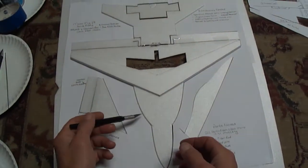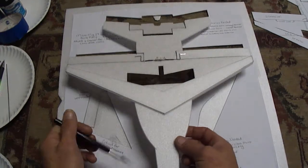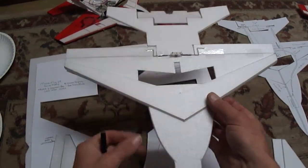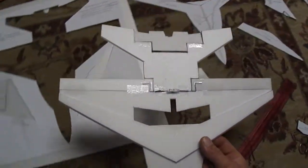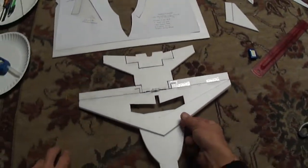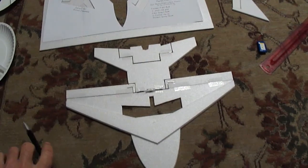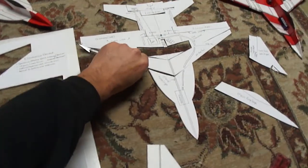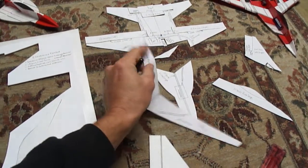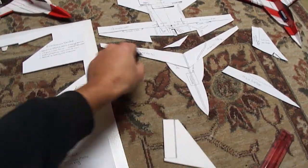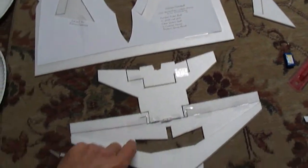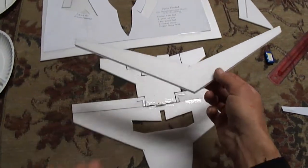So then we went ahead and we cut out the main body of the plane. Once you had that done, we went ahead and cut off the KF airfoil, and we traced it onto our other sheet of foam and we got that piece.